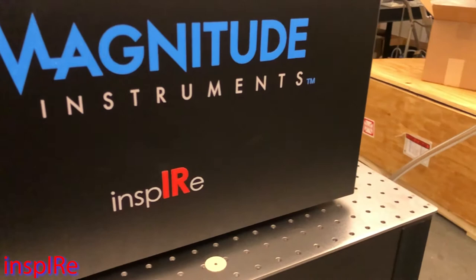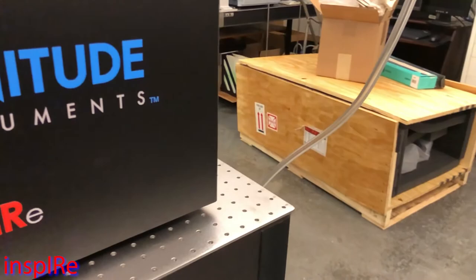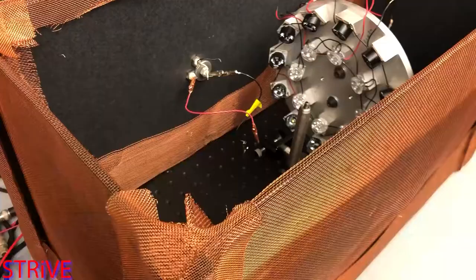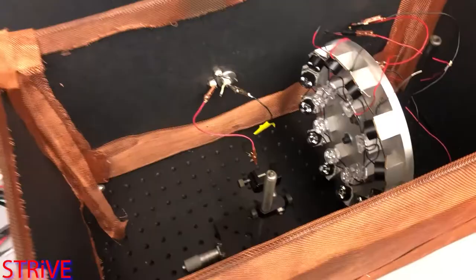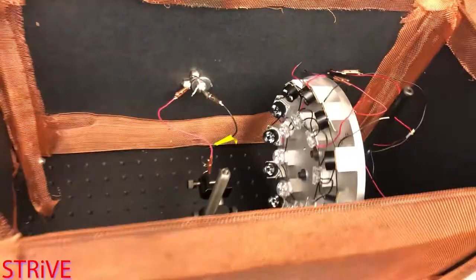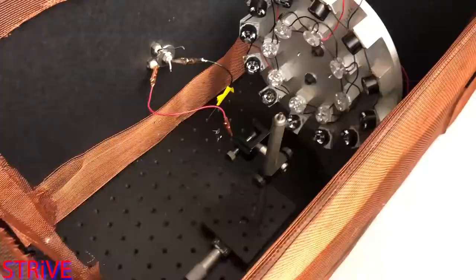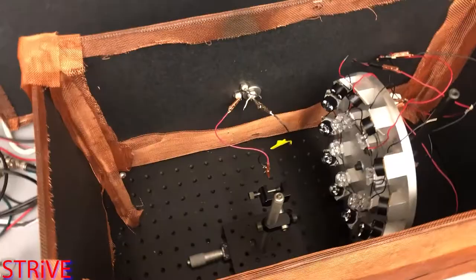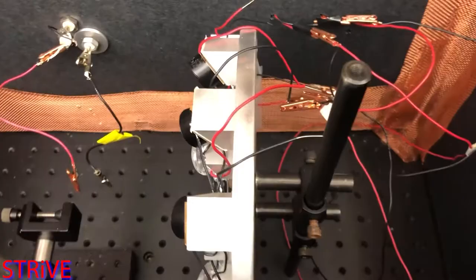STRIVE is an acronym for Sequential Time Resolve Current Voltage Experiment and is an apparatus designed to measure charge density, charge transport, and recombination in dye-sensitized solar cells from 0.1 to 10 sun illuminations. The STRIVE monitors electrical signals and is capable of measuring the voltage and current simultaneously with microsecond time resolution.